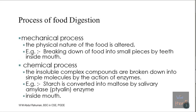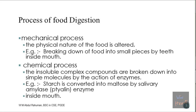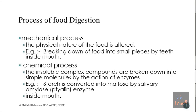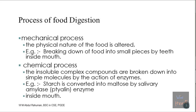When we speak about the mechanical process of digestion, it means the physical nature of the food is altered. We take the food and change it into a different state. For example, if you have a solid, by munching we can make it into a semi-solid or liquid. We break down the food into small pieces - if you take a biscuit or a piece of meat and chew it, it breaks down into small pieces.